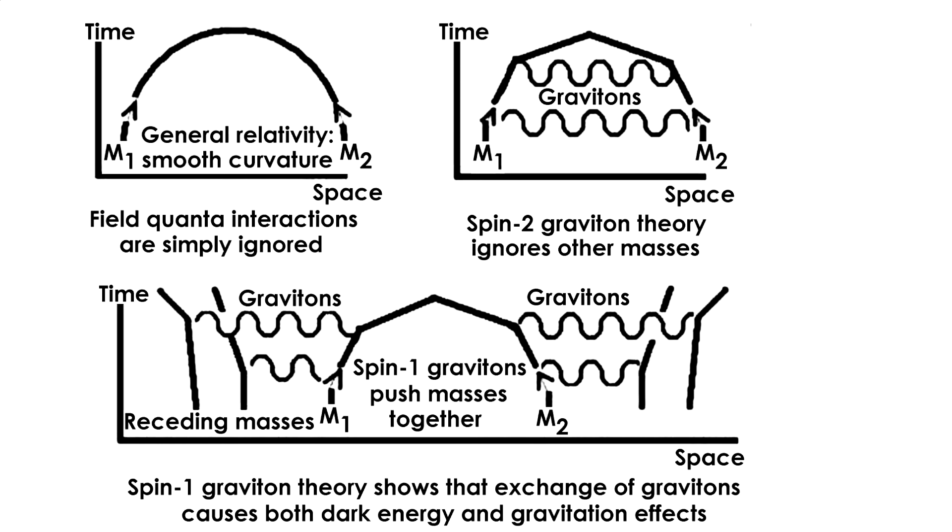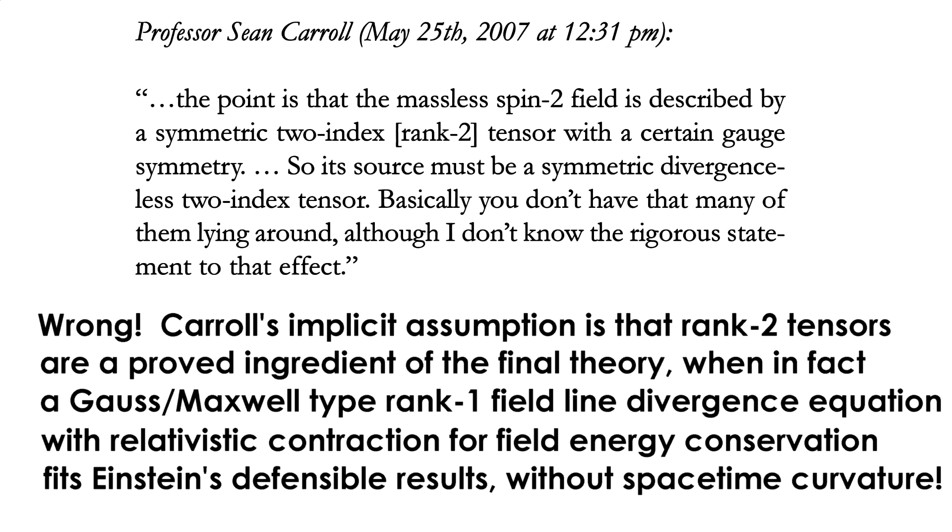One of them is, all masses fall, light has energy, and energy is equivalent to mass, so light should fall. And that should mean that light going near the sun is deflected, it is.